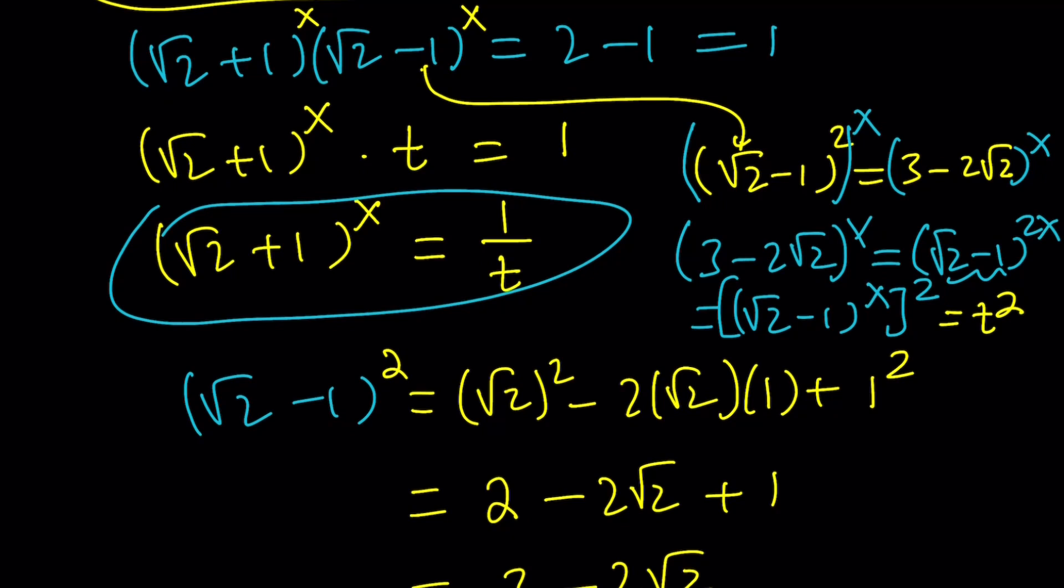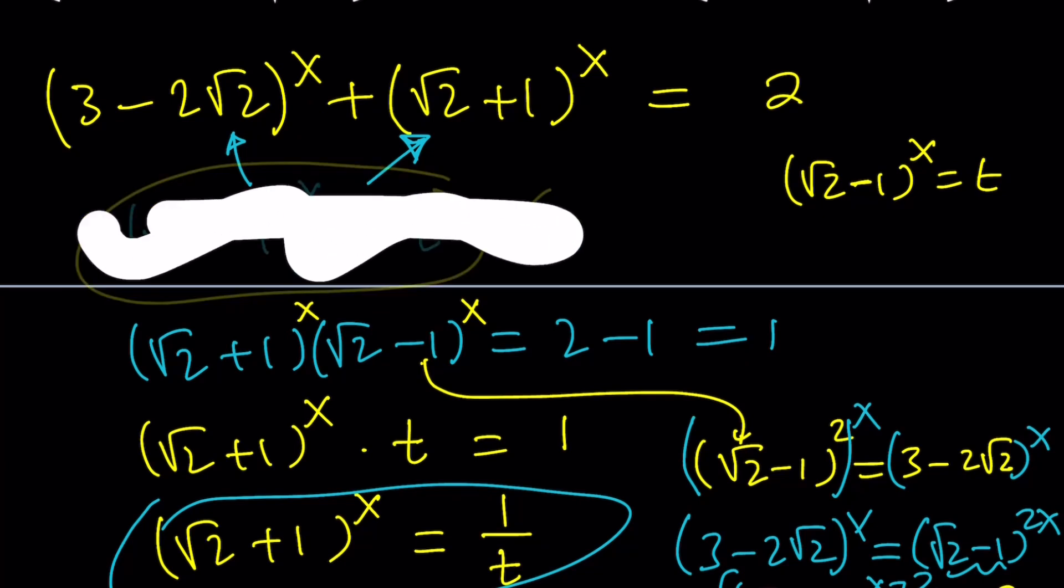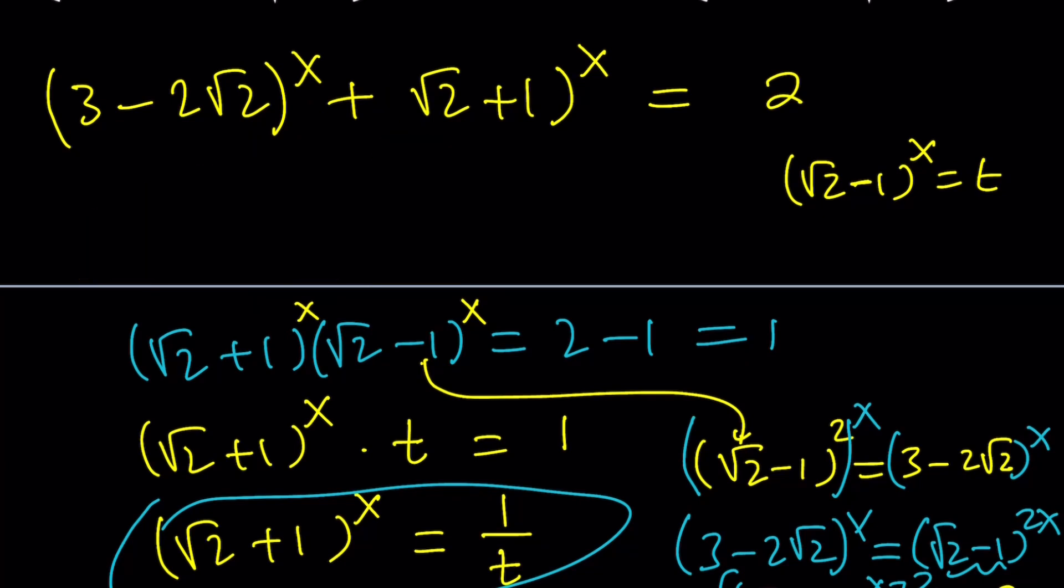Now, here's what we have from here. Let's go ahead and erase this. We call this t. Let's not forget that. Sometimes I just erase and then I forget what my substitution was and then I can't back substitute.